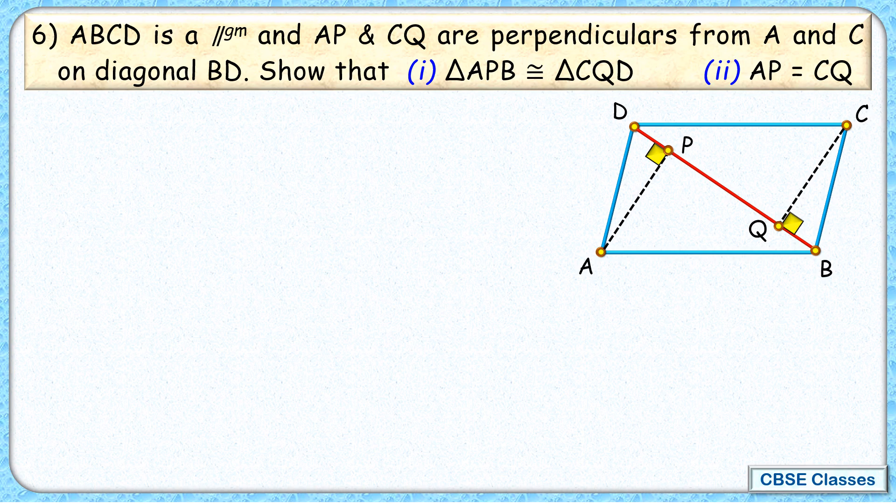Question Number 6. Here we have given ABCD is a parallelogram, and from point A, AP is drawn perpendicular, and from point C, CQ is drawn perpendicular on diagonal BD. And here we have to prove triangle APB and triangle CQD are congruent.